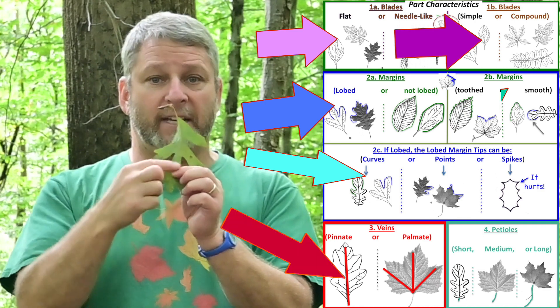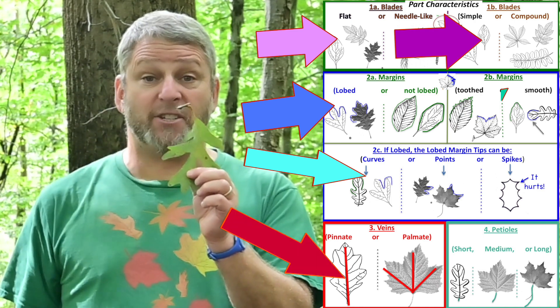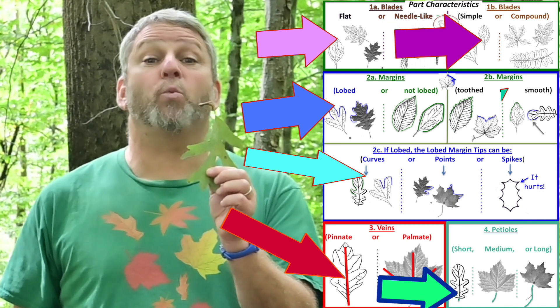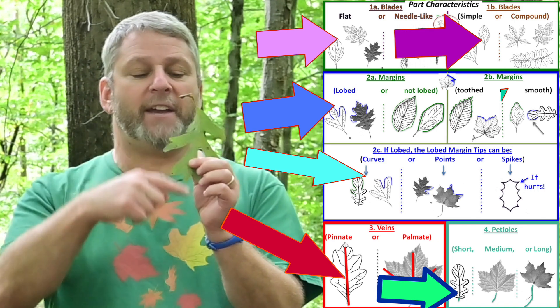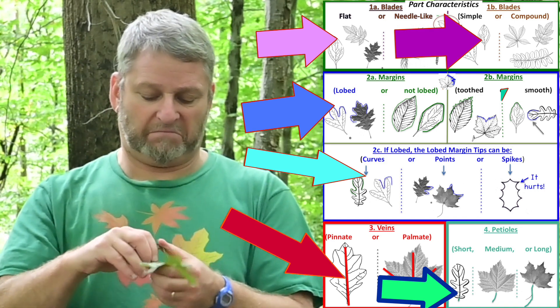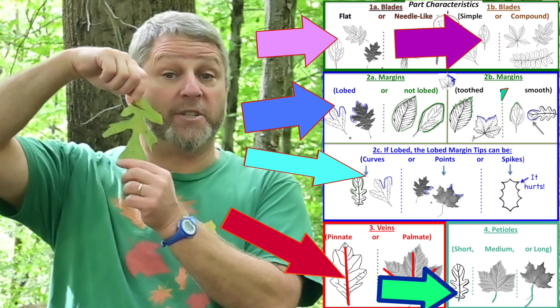The veins, it has one primary vein stuck to the petiole. So the veins are pinnate. One straight as a pin vein. And last but not least, the petiole. The petiole is way shorter than half the blade. If I bend it over, it doesn't even go to the middle. So this has a short petiole.